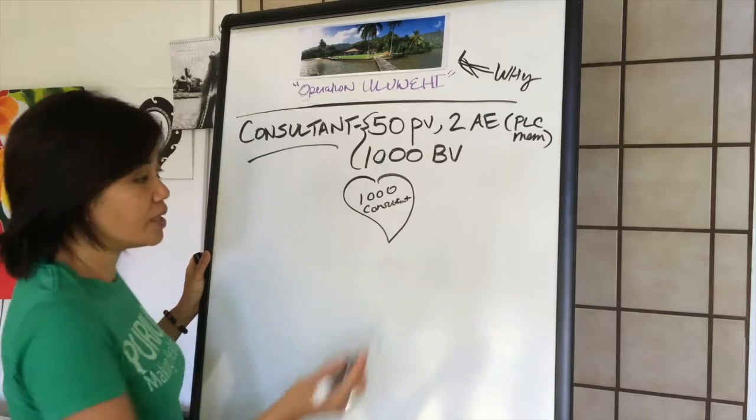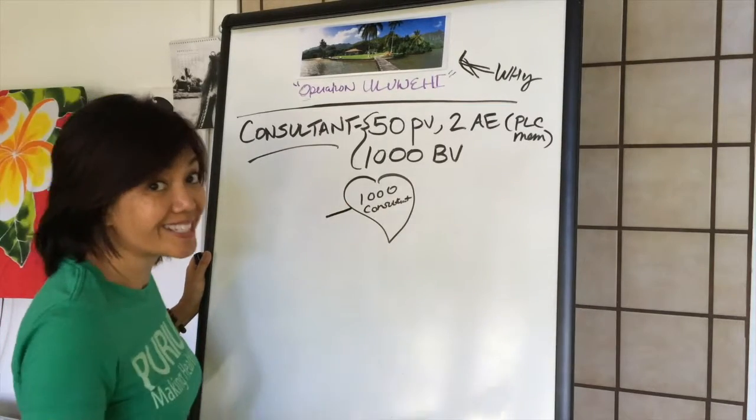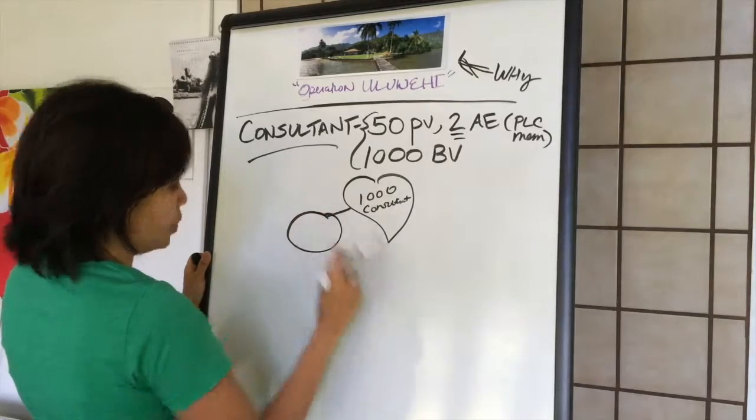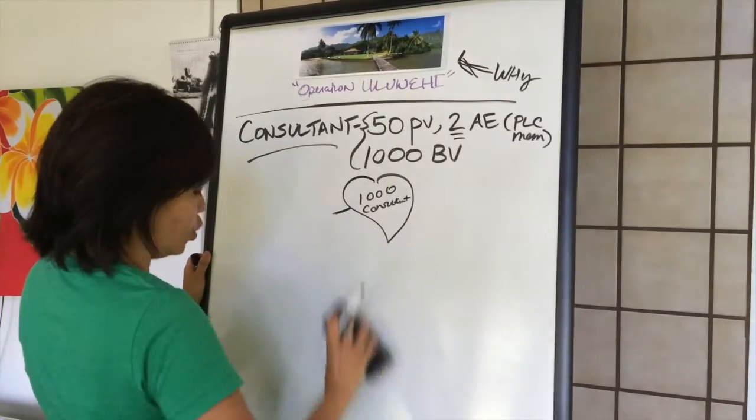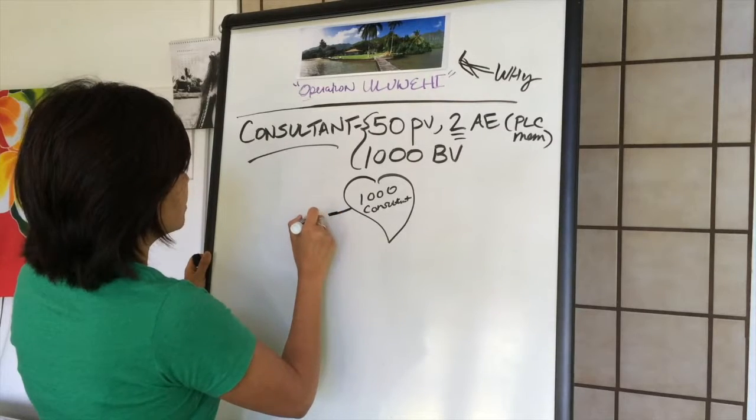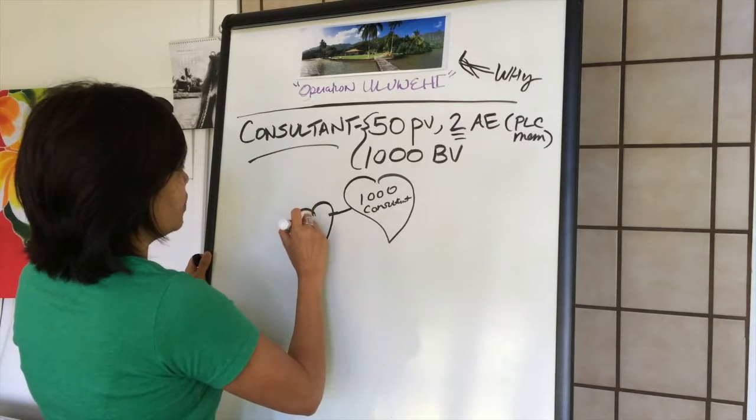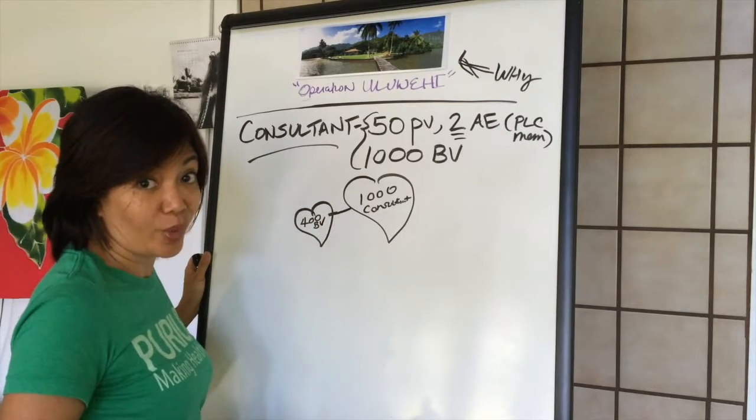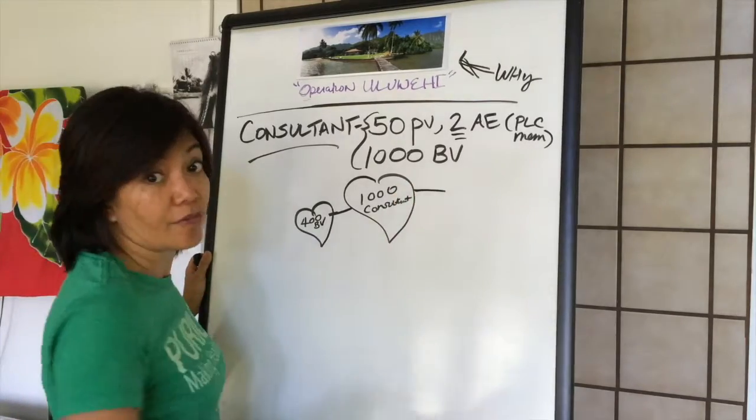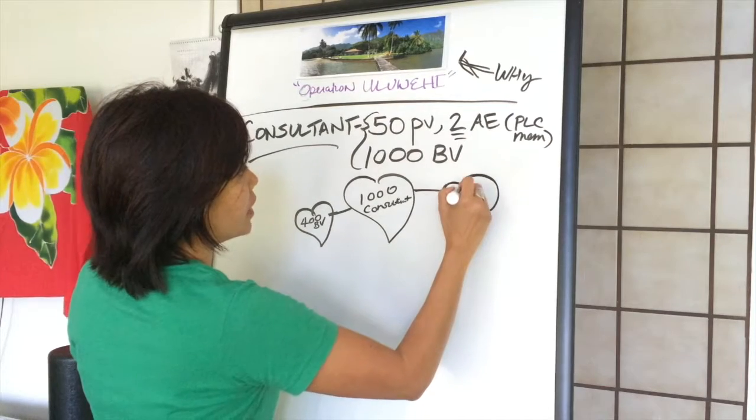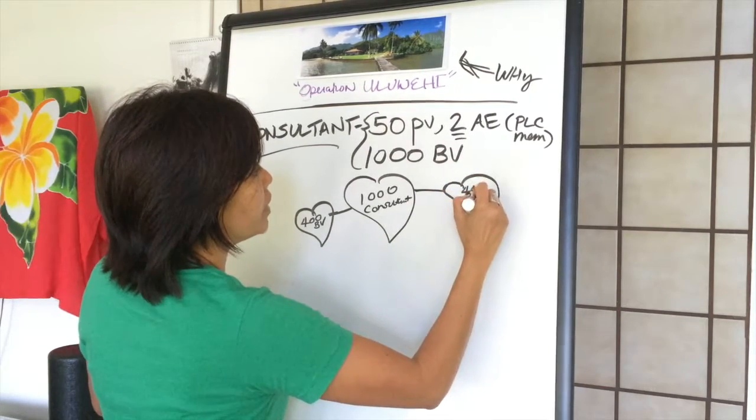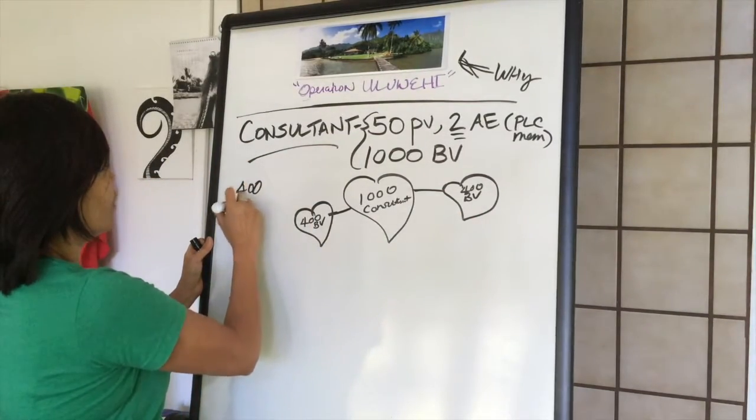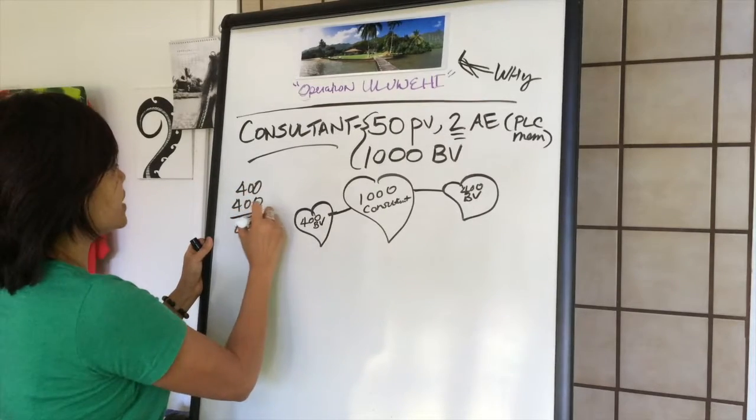So to get the 1,000 BV, all you need to simply do is, for instance, there's many ways you could do this, but for instance to honor the two active enrollees, you enroll two people to you. Like say you have a couple that wants to get healthy. That's 400 BV, that's a platinum order. And perhaps you got another family member who wants to get healthy. That's another 400 BV, another platinum order. So what does that equal to? You got 400, 400, that's 800 business volume already.